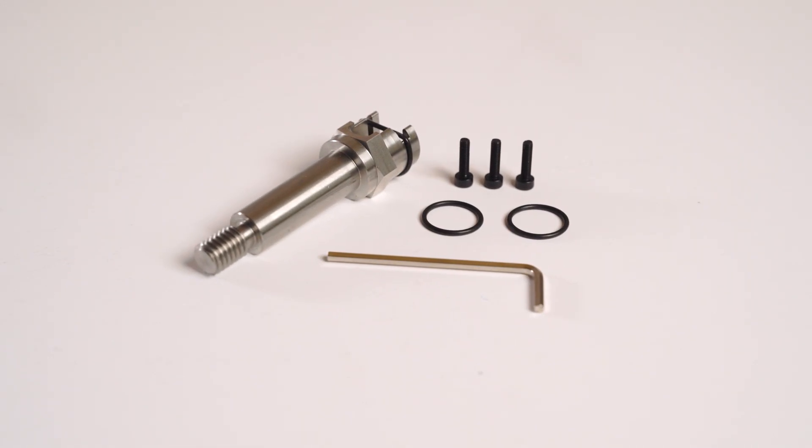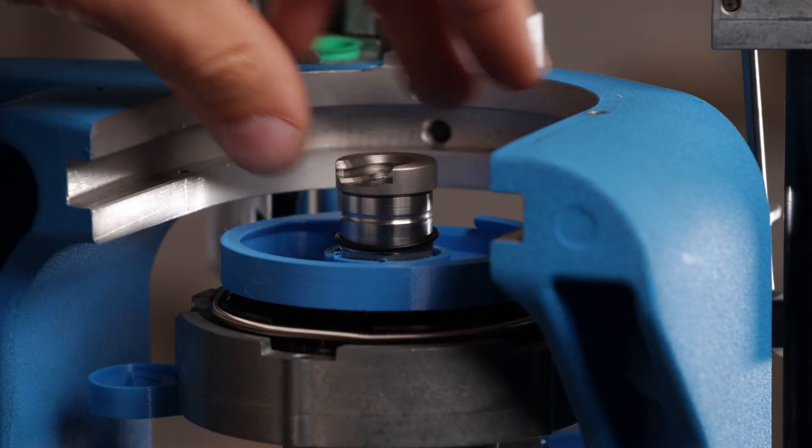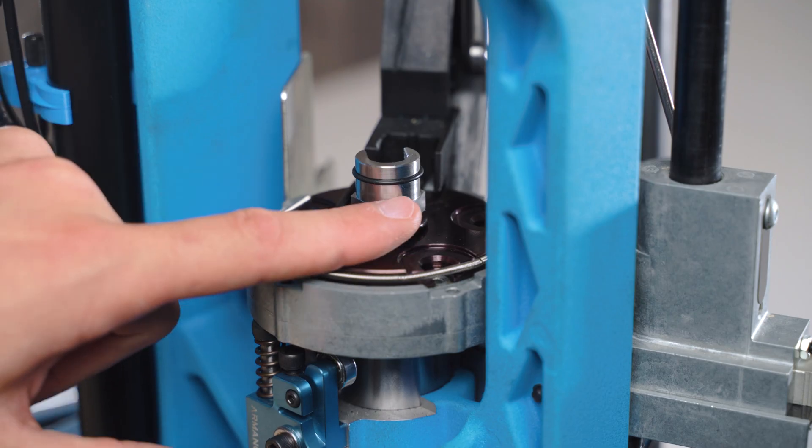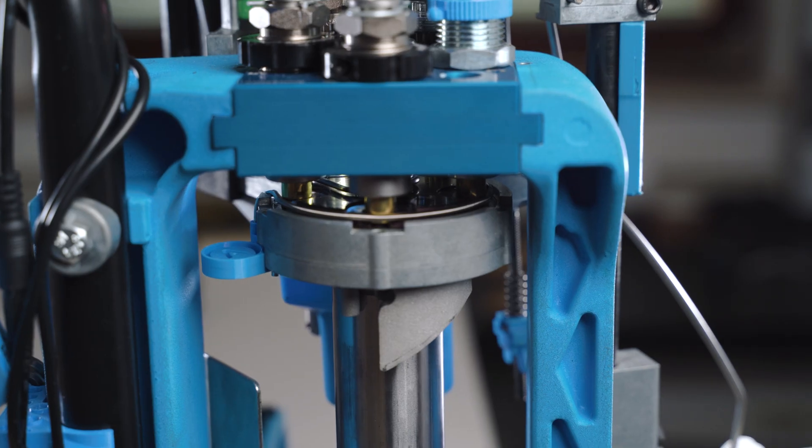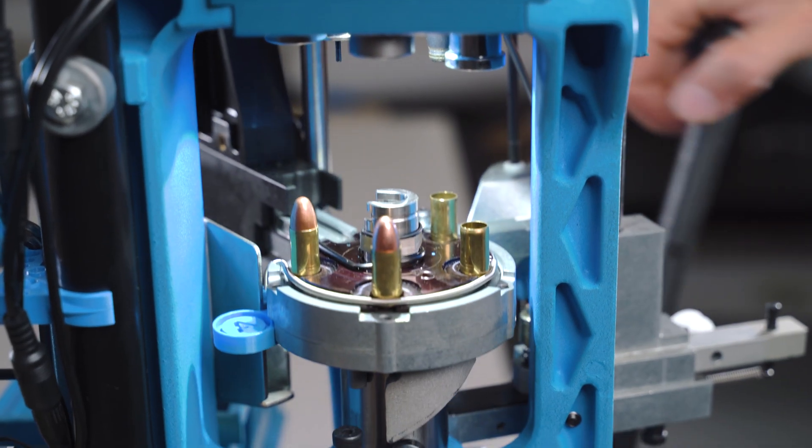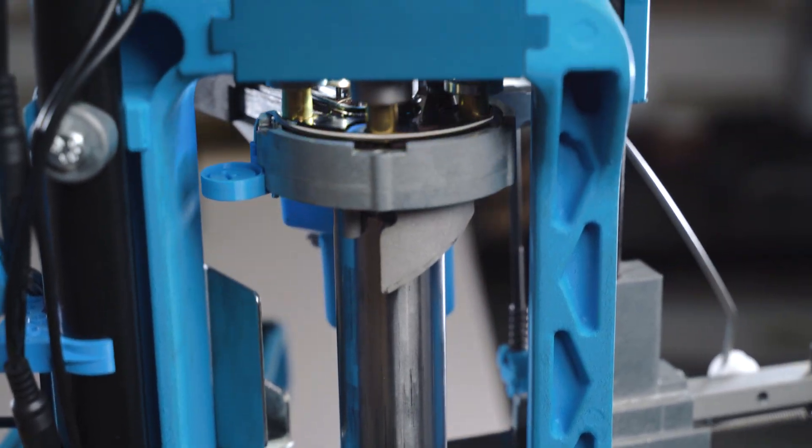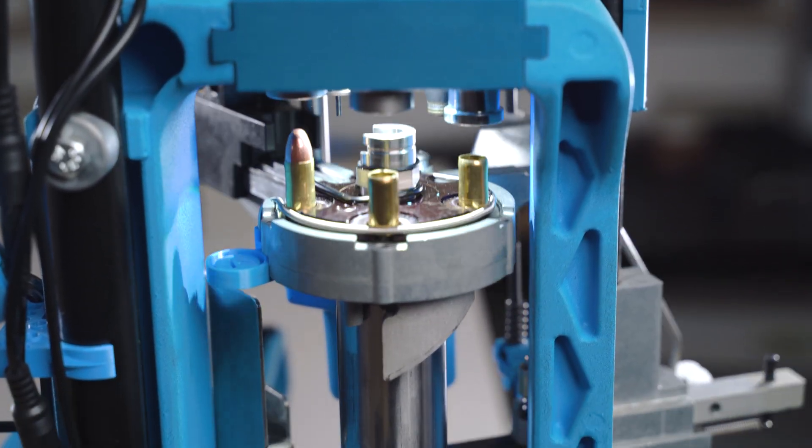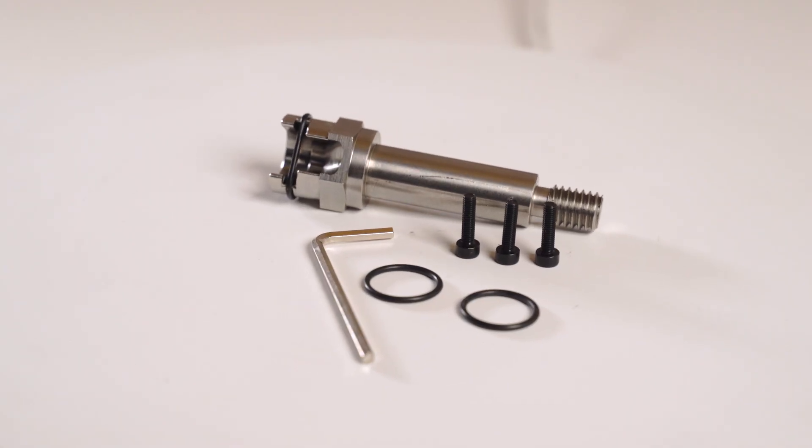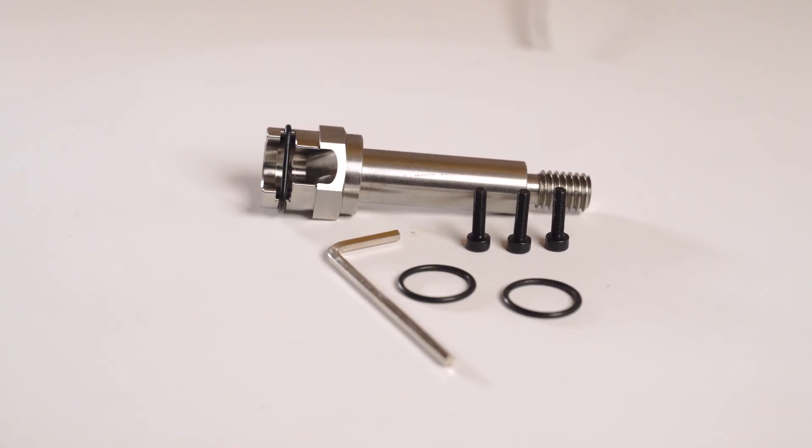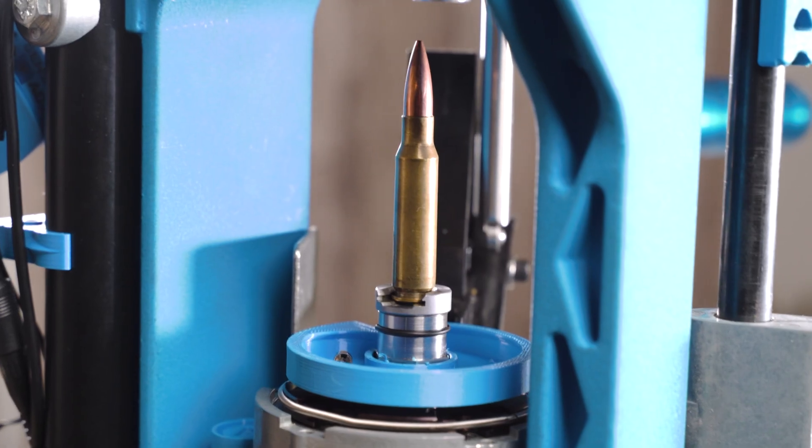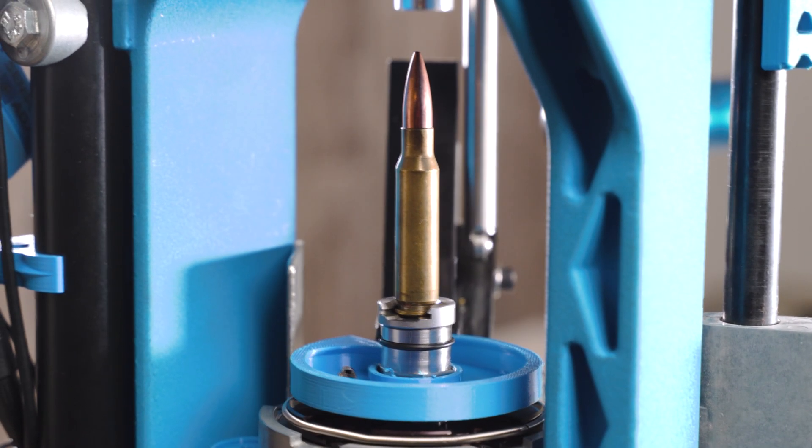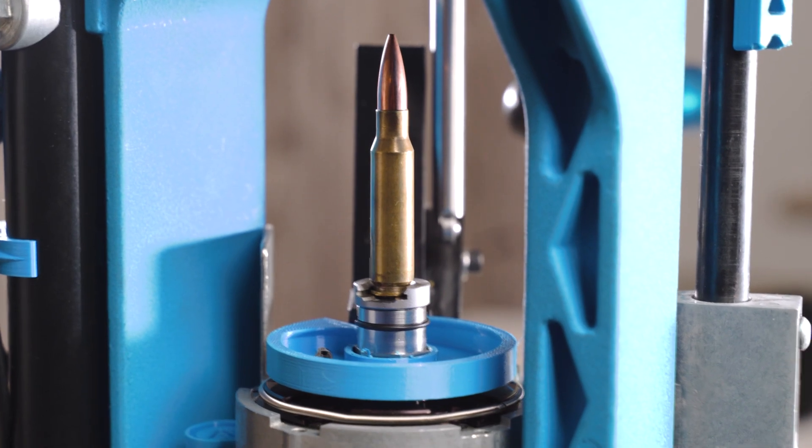One of the main features is also the stainless steel adapter bolt that is designed to fit all standard shell holders. Once installed on your machine it will not interfere with normal operation when the press is in standard progressive setting, so you can leave it installed all the time. This allows for super quick change from progressive reloading to a single stage setup. Single stage conversion kit is compatible with both Dillon XL650 and XL750 machines.